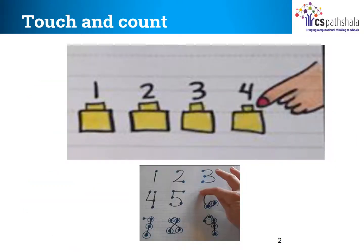Let's try the second method of counting — touching and counting each object. Children, can you touch all the legs of your desk and count how many legs each desk has? 1, 2, 3 and 4. Can you touch and count the number of buttons on your shirt? You need not look at the buttons on your shirt; you can look at the screen or board, but still, while you touch and feel them, you can count.